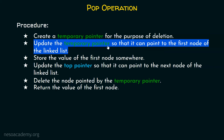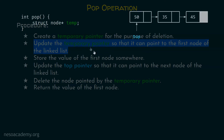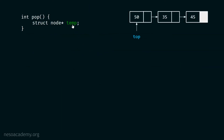After this, we must update the temporary pointer so that it can point to the first node of the linked list. Let us suppose this is the initial state of the linked list — currently top pointer is pointing to the first node of this list, which means this is the topmost element of the stack. We have to update our temporary pointer temp so that it can point to this node. For this purpose, we put the line of code: temp equals to top. In this way, the temporary pointer will point to the first node of this linked list.